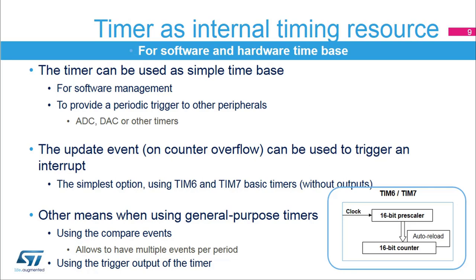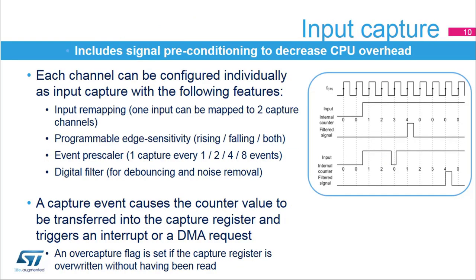It is also possible to generate multiple timing events with a single timer using multiple compare channels. Each channel can be individually configured as an input capture with a number of signal conditioning options. An input can be mapped on two capture channels, typically to differentiate rising edge from falling edge capture. The edge sensitivity is programmable and can be rising edge, falling edge, or both edges. An event prescaler allows capture of one event every two, four, or eight events. This decreases the CPU burden when processing high-frequency signals and allows the measure to be more accurate, since it is performed over multiple input signal periods.